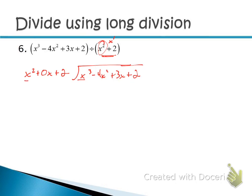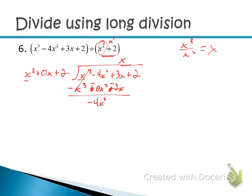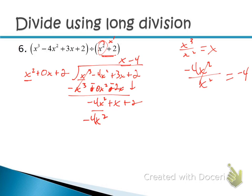Divide the first two terms: x³ over x² gives x. Put x on top. Multiply down: x times (x² + 0x + 2) = x³ + 0x² + 2x. Change all signs. Those add to 0; −4 − 0 = −4x²; 3x − 2x = +x. Bring down +2. Repeat: divide −4x² by x² to get −4. Put −4 on top. Multiply down: −4 times (x² + 0x + 2) = −4x² − 0x − 8. Change all signs. Get 0, then +x, then +10. No more terms — so x + 10 is the remainder.